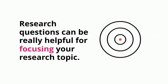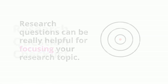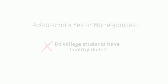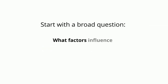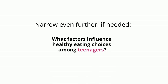Once you've narrowed your topic to an appropriate scope, the next stage is to write a research question. Research questions can be really helpful for focusing your research topic and clearly defining the scope. Your research questions should be open-ended and neutral. In other words, avoid simple yes or no responses, and avoid looking at just one side of an argument. You can start with a broad question like: what factors influence healthy eating choices? And later, you might want to narrow your topic further by looking at just one factor for healthy eating, or by looking at a specific population group or geographic region.